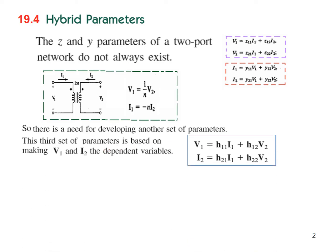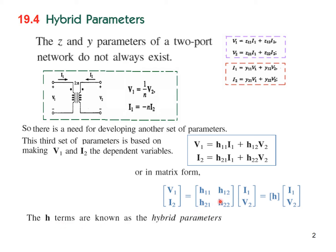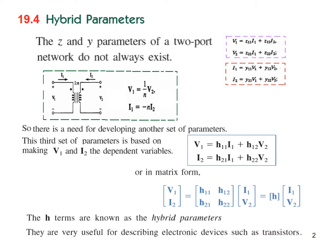The third set of parameters is based on making V1 and I2 the dependent variables, so V1 and I2 are made dependent on I1 and V2. Written in matrix form, the equation is as shown. The H terms are called hybrid parameters, and they are very useful in describing electronic devices such as transistors, so when you study electronic devices you might come across hybrid parameters.